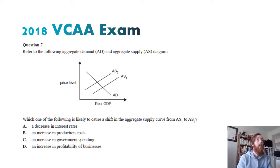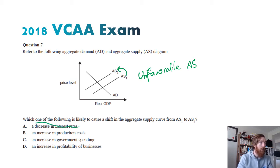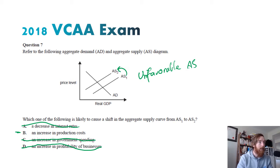Question seven — which of the following is most likely to cause the shift in the aggregate supply curve from AS1 to AS2? We can see it moves in an unfavorable direction, so we need something unfavorable for aggregate supply. A decrease in interest rates would be favorable, so rule that out. An increase in production costs is bad for aggregate supply — that's a strong candidate. Increased government spending is AD focused and good for AS if on infrastructure. Increased business profitability is also good for aggregate supply. So B — an increase in production costs — is the answer.